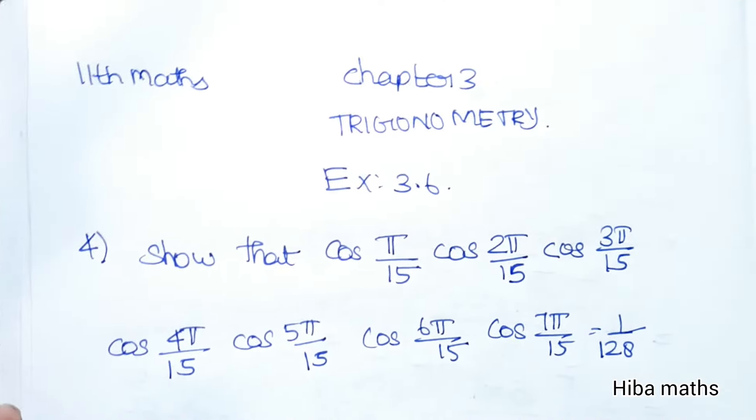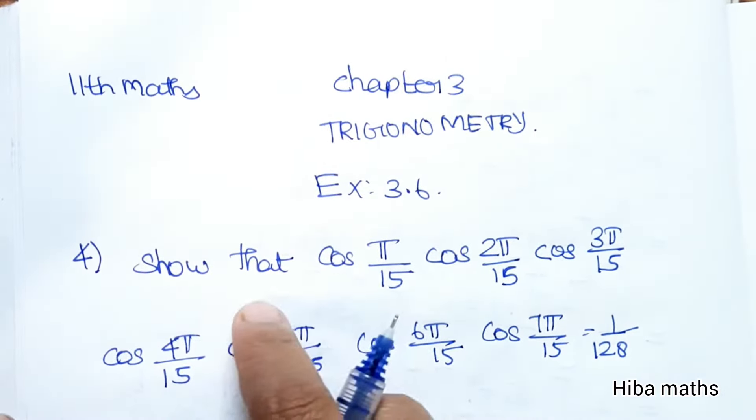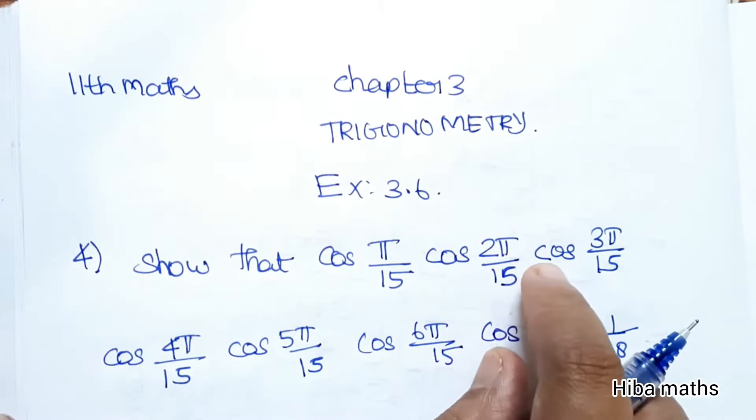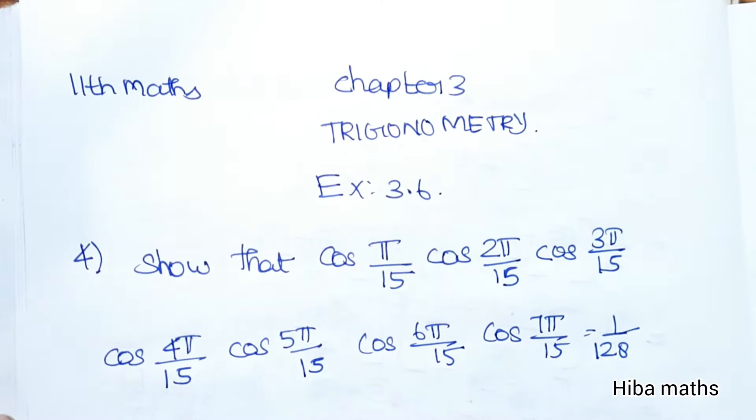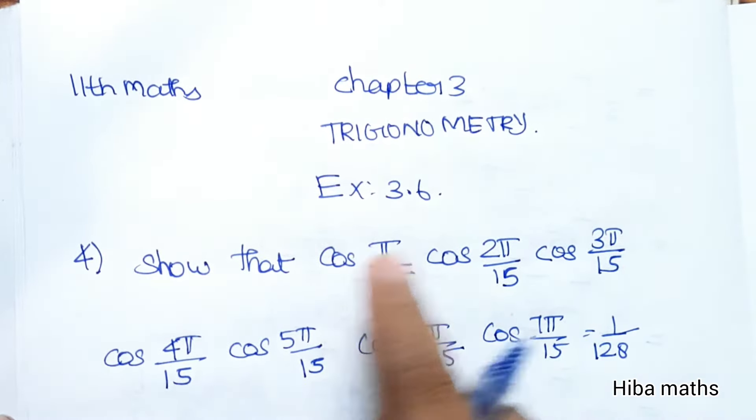Hello students, welcome to Hiba Maths, 11th standard maths, chapter 3 trigonometry, exercise 3.6, fourth question. We need to show that cos(π/15) × cos(2π/15) × cos(3π/15) × cos(4π/15) × cos(5π/15) × cos(6π/15) × cos(7π/15) is equal to 1/128.